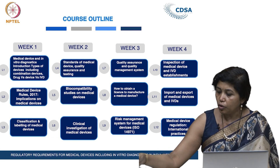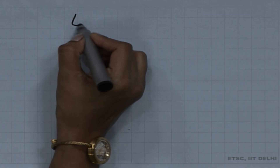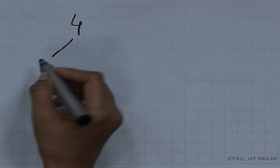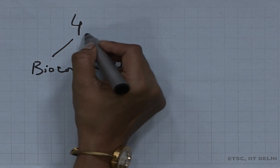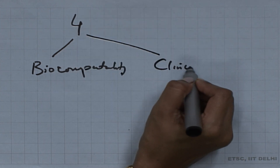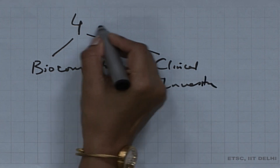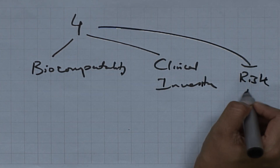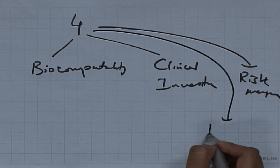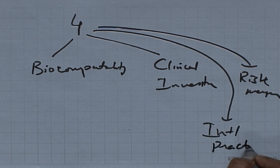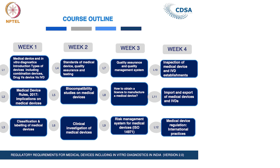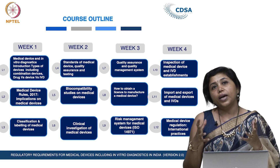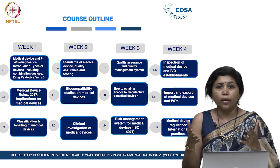Based on feedback, we included four new lectures: one on biocompatibility, another on clinical investigation plan, the third on risk management, and the fourth on international practices. These four areas were very important and interesting, addressed in version 2. Each of the four weeks has around 3 lectures.